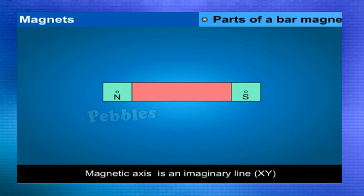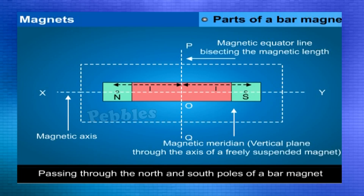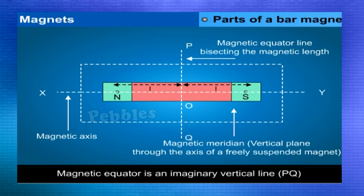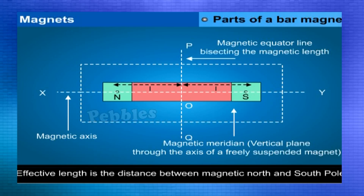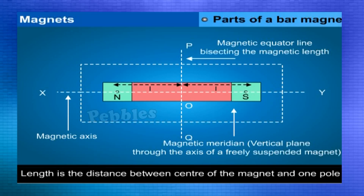The magnetic axis is an imaginary line X-Y passing through the north and south poles of a bar magnet. The magnetic equator is an imaginary vertical line PQ dividing the bar magnet into two equal parts. The effective length is the distance between the magnetic North Pole and magnetic South Pole.